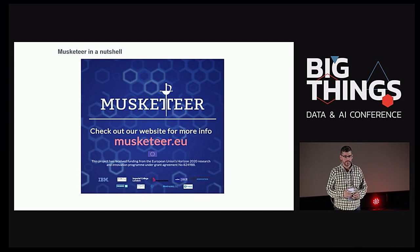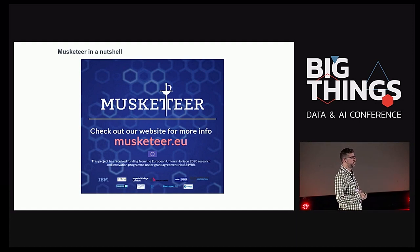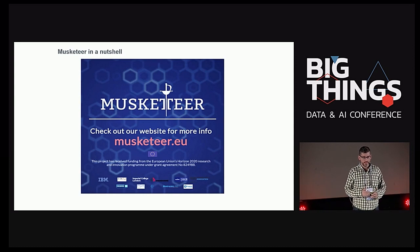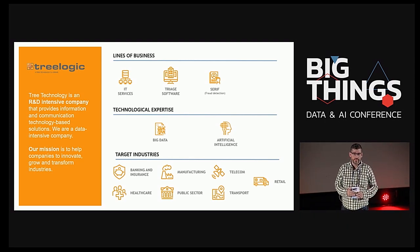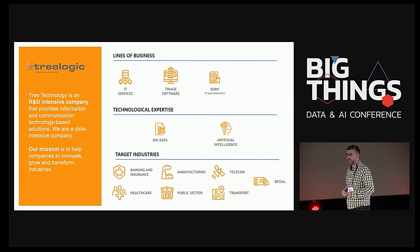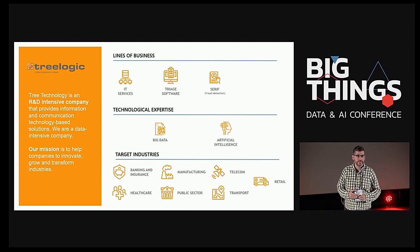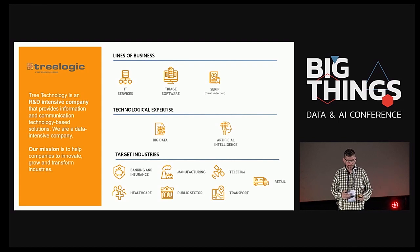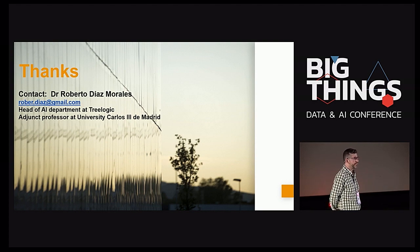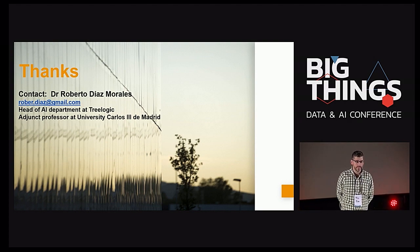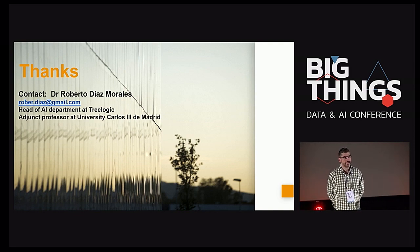The first version of Musketeer will be available in a few months, and we are going to organize a hackathon — so pay attention on Twitter and take part. To finish, this is Trilogic, my company. We provide services to our clients and also take part in many research projects in order to learn the state of the art in machine learning. You have my email address here — if you have any questions in the future, you can contact me. That's all.